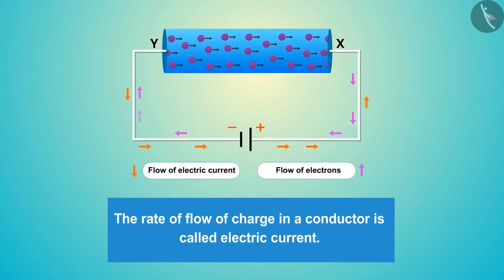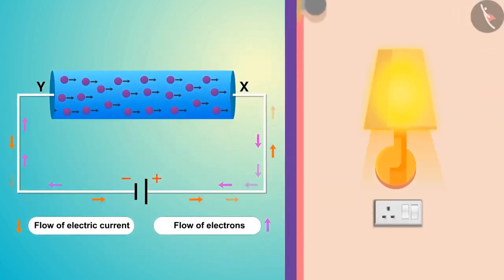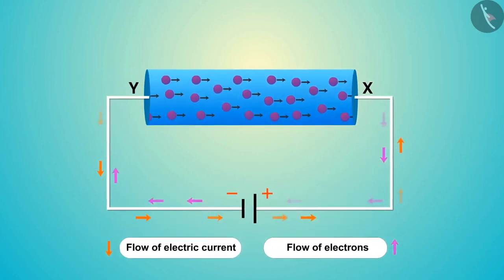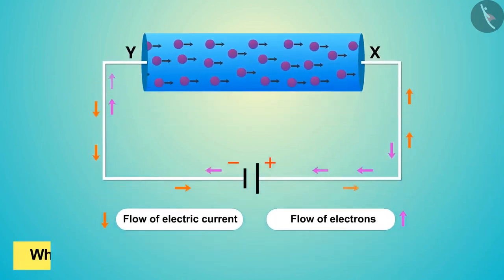The rate of flow of charge in a conductor is called electric current. This is the electric current that lights the bulb. We know that charge is always present in the metallic wires, so why do we need to put batteries in the circuit for the bulb to glow?